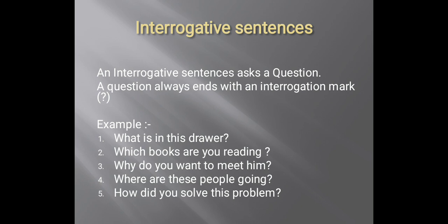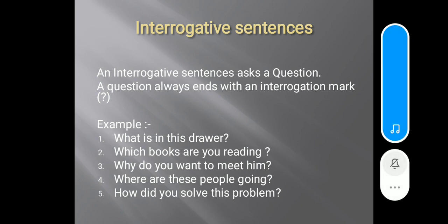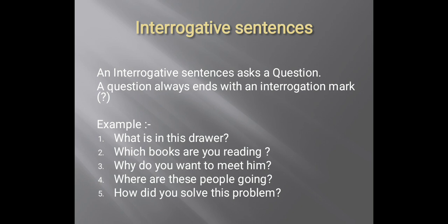Second example is: 'Which books are you reading?' Third example is: 'Why do you want to meet him?' Fourth is: 'Where are these people going?' And the last one is: 'How did you solve this problem?' All these examples show that they ask a question and all end with an interrogation mark. These types of sentences are interrogative sentences.